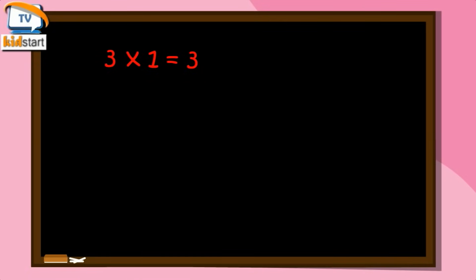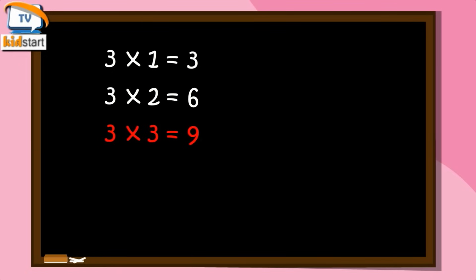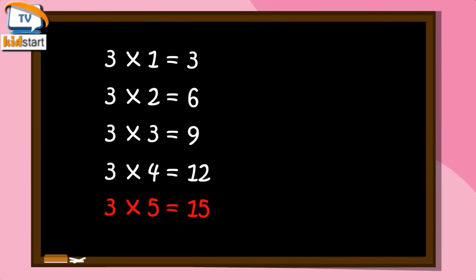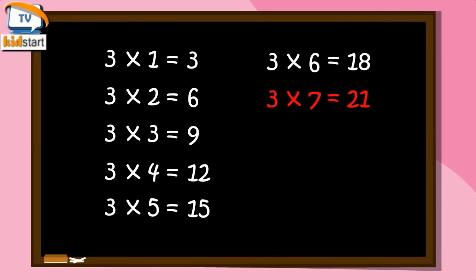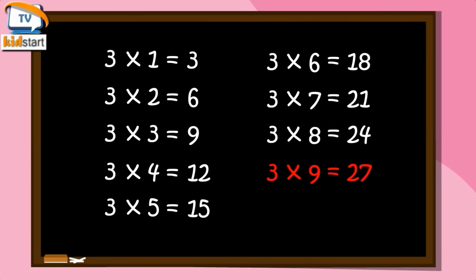Three Ones are Three. Three Twos are Six. Three Threes are Nine. Three Fours are Twelve. Three Fives are Fifteen. Three Sixes are Eighteen. Three Sevens are Twenty One. Three Eights are Twenty Four. Three Nines are Twenty Seven. Three Tens are Thirty.